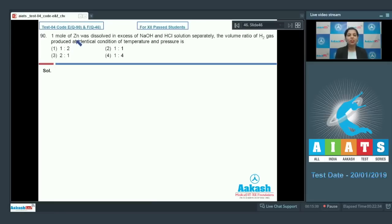The last question of the chemistry section: One mole of zinc was dissolved in excess of sodium hydroxide and HCl solution separately. The volume ratio of H2 gas produced at identical conditions of temperature and pressure is? You have zinc, one mole, dissolved in excess of NaOH and similarly in excess of HCl also.